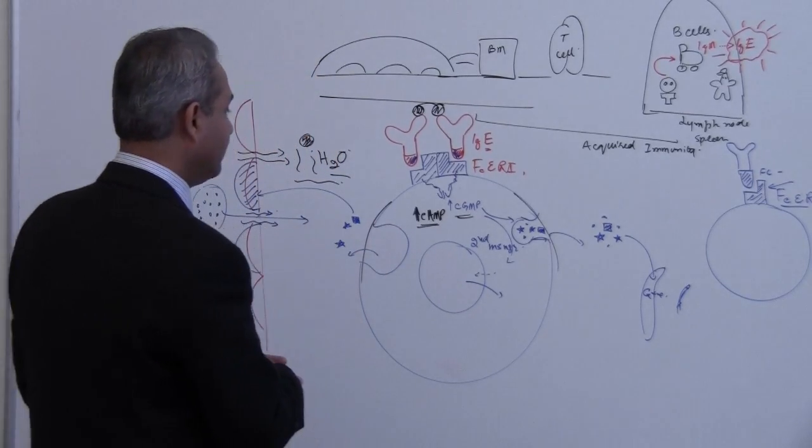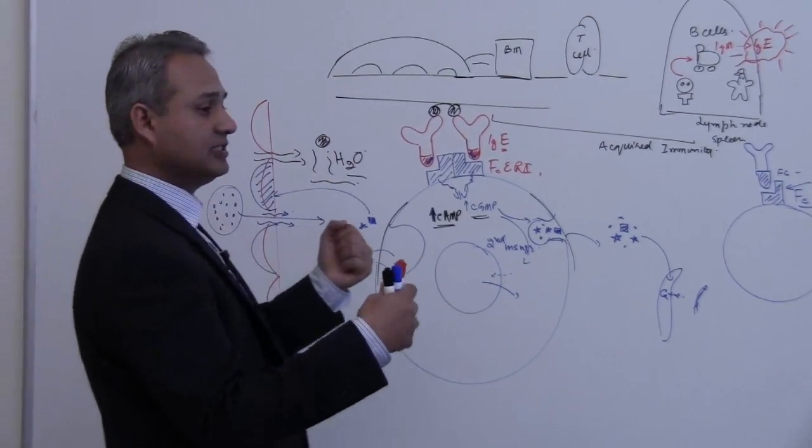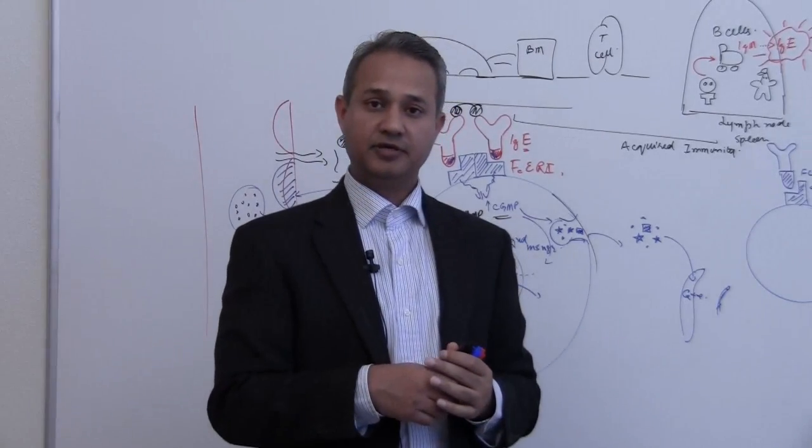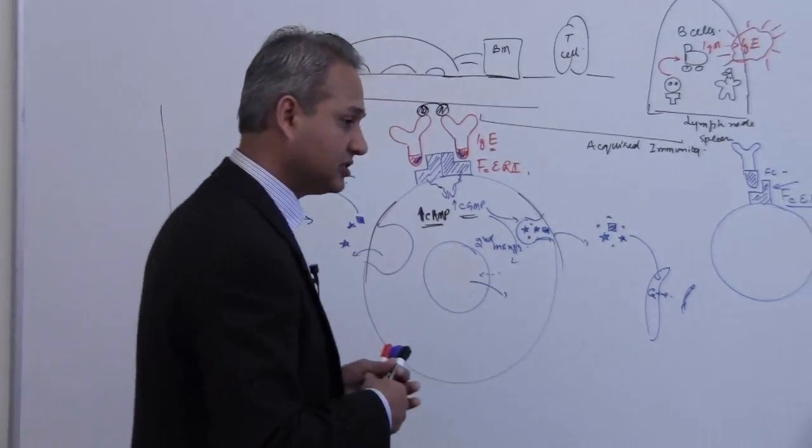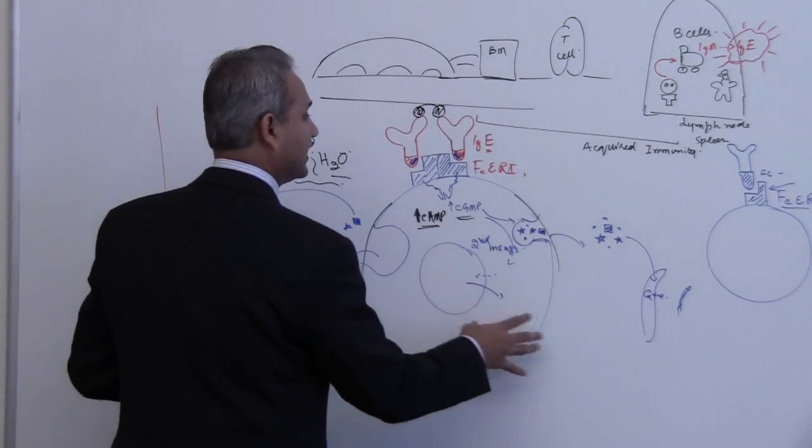Okay, so now we also understand the effect of cyclic GMP and cyclic AMP. Let us continue our discussion to talk about what happens next.